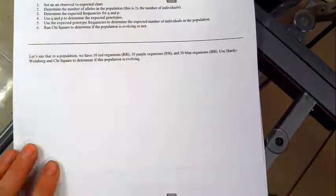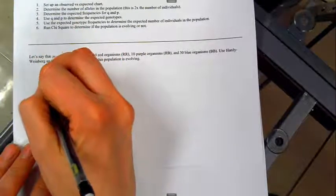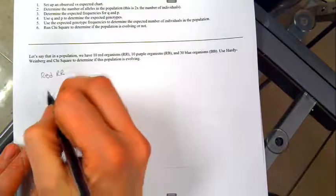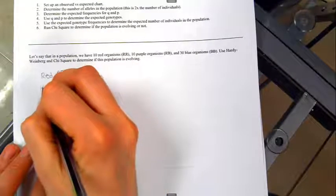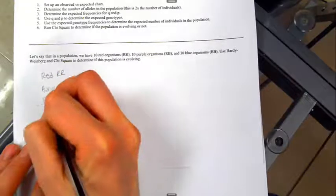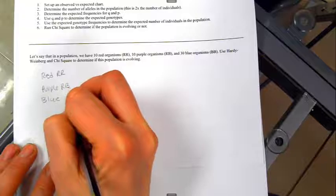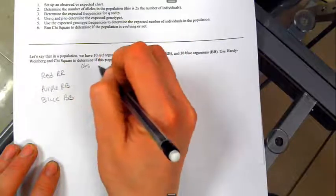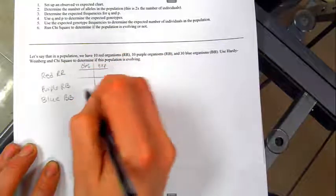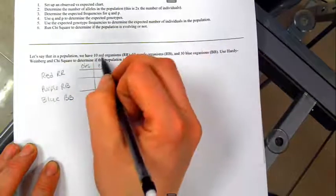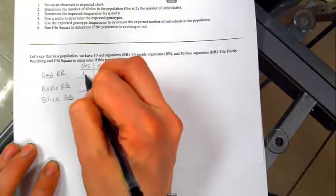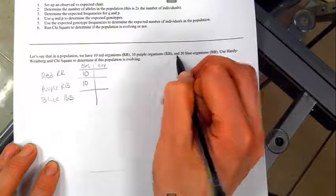So step one, set up an observe versus expected chart. For red, I'm going to put both the color, the phenotype, and the genotype, just so I have it easily accessible. Purple and blue. I'm going to do observe versus expected. And we have the numbers that we observe. We observe 10 red, 10 purple, and 30 blue.